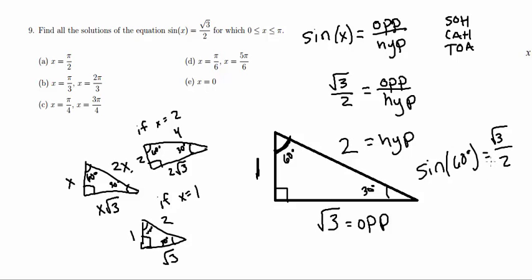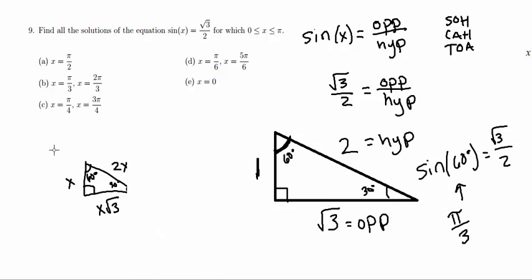And if you know this off the top of your head, you're going to know that the sine of 60 is equal to pi over 3. If you're not sure what you can do is, let me erase this.